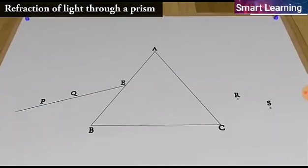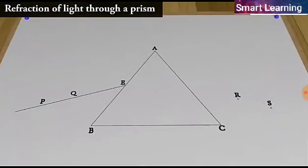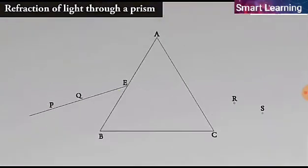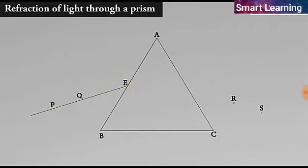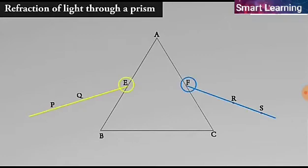Remove the pins and the glass prism. The line PE meets the boundary of the prism at point E. Similarly, join and produce the points R and S. Let these lines meet the boundary of the prism at E and F respectively. Join E and F.